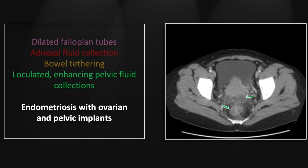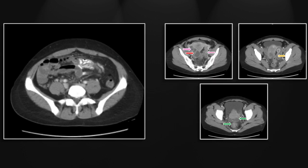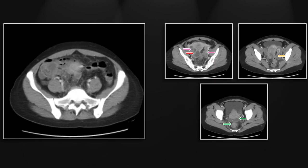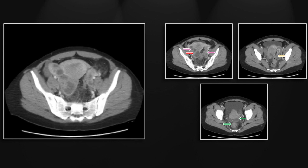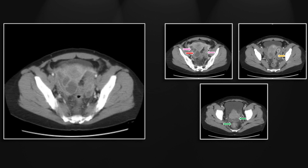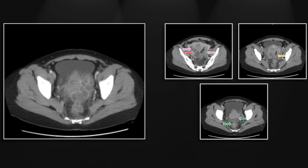I admit to having done a lot of endometriosis workups with MR, and to have come to an early conclusion that I could, in fact, tell endometriosis from tubo-ovarian abscesses. But as you look at these last two cases, you can see that I was unreasonable in my evaluation of my own abilities. There really is no good way to tell the two apart.